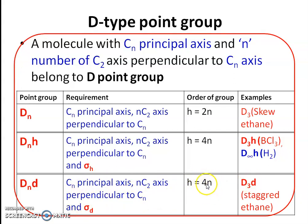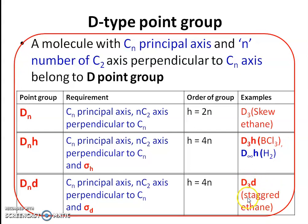The total number of symmetry operations for the DnD point group is h = 4n. An example is D3D — staggered ethane belongs to the D3D point group. So these are the three types of D-type point groups: Dn, DnH, and DnD.